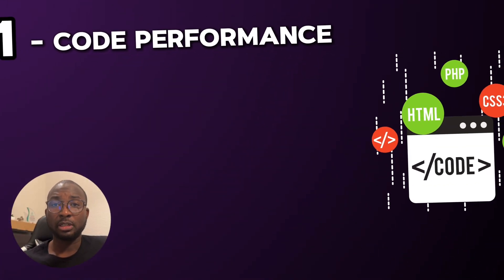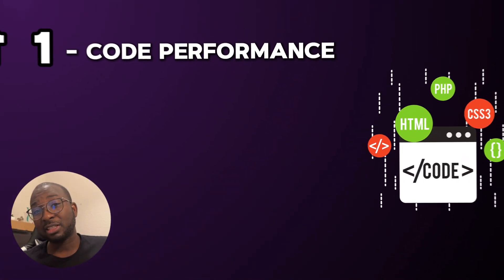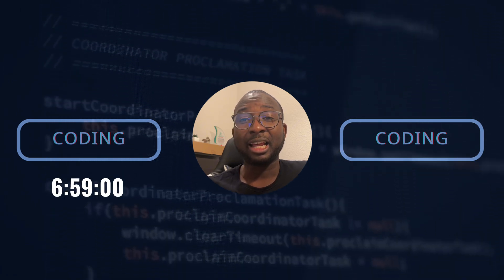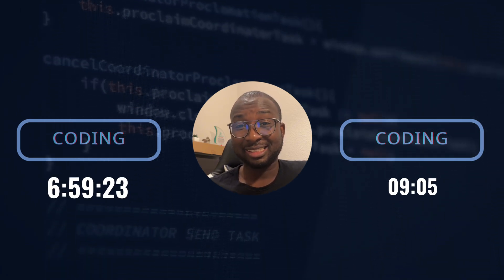The first thing is code performance. The first skill I've seen that a lot of data science courses and online bootcamps don't teach you about is code performance and how to write clean and efficient code. This is a very important skill for every data scientist to learn. Understanding code performance is the difference between writing code that takes six to seven hours to run and another that takes 10 minutes.